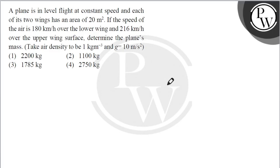The question is: A plane is in level flight at constant speed and each of its two wings has an area of 20 meters squared. The speed of the air is 180 km per hour over the lower wing and 216 km per hour over the upper wing surface. Determine the plane's mass. Take air density to be 1 kg per meter cubed and g equals 10 meters per second squared.